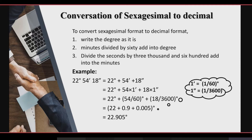Next, there is conversion of the Sexagesimal system to the decimal system. To convert the Sexagesimal system to the decimal system, there are some steps. First: write the degrees as it is. Second: divide the minutes by 60 and add into the degrees. Third: divide the seconds by 3600 and add it into the result.